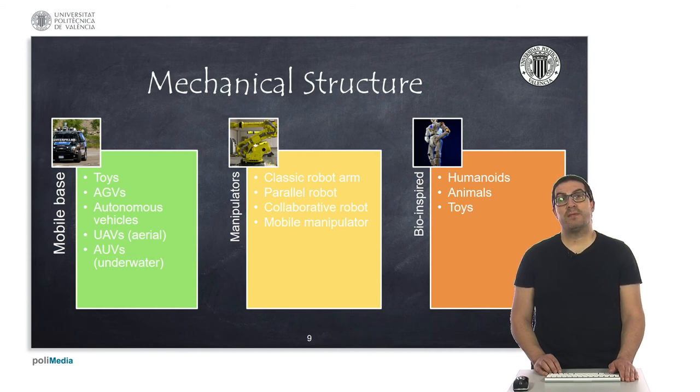Then we have the classic anthropomorphic robot arm, used as a manipulator, and then they have also, for instance, parallel robots, collaborative robots. They are used basically in the industry, as we already mentioned.